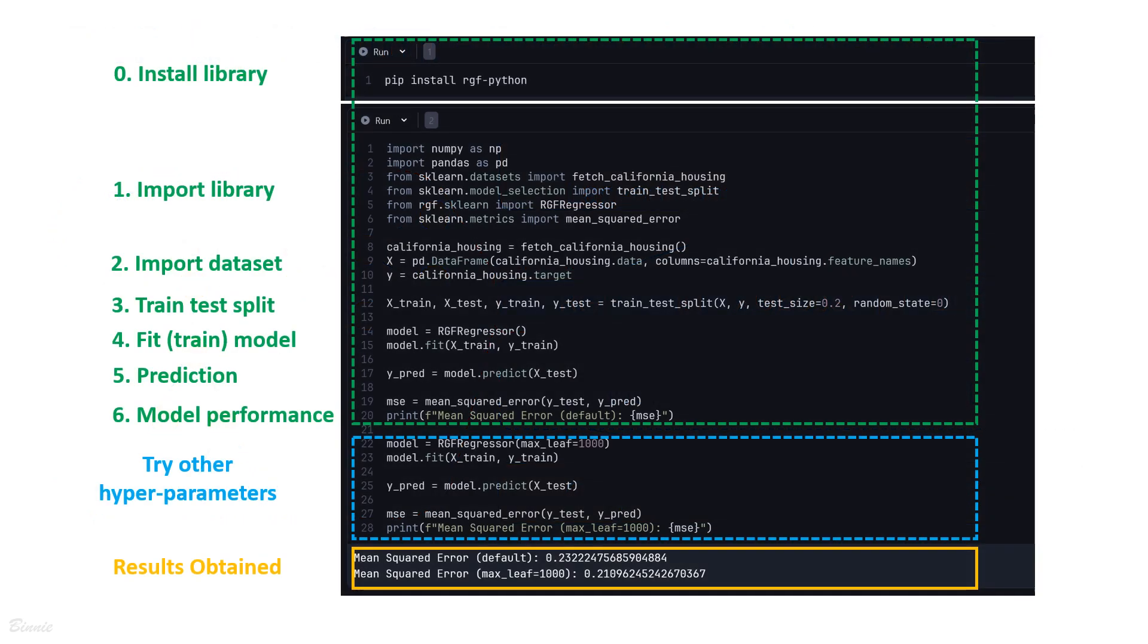Then we can demonstrate the RGF on a regression problem in Python. It is easy, just similar to using other machine learning libraries like XGBoost and LightGBM. You can run the Python code in Visual Studio, Jupyter Notebook, or Google Colab as well.